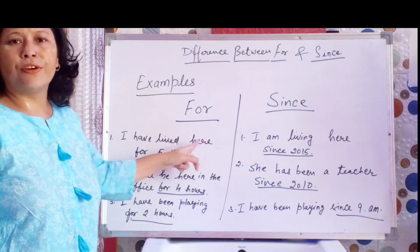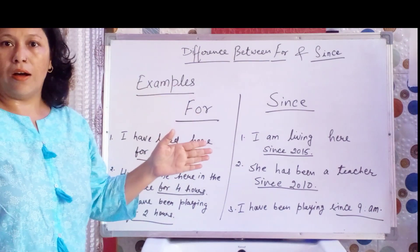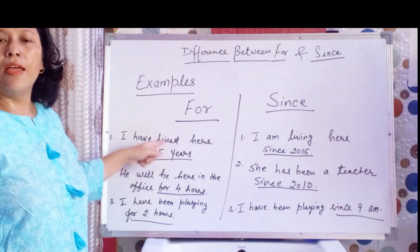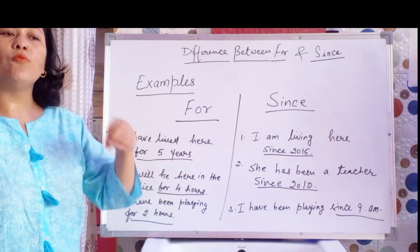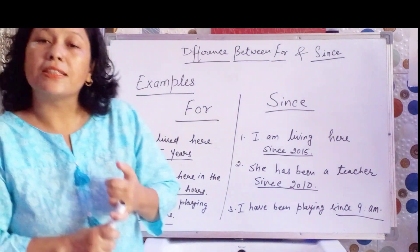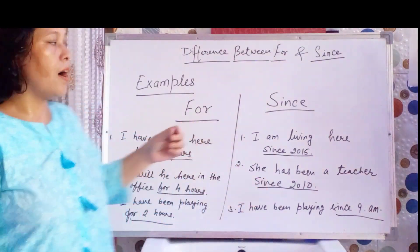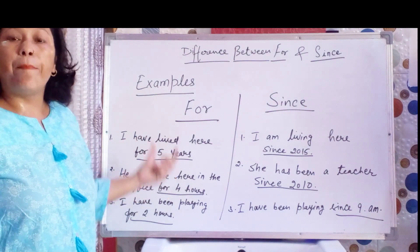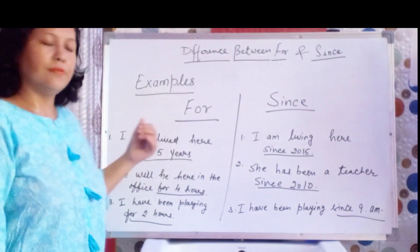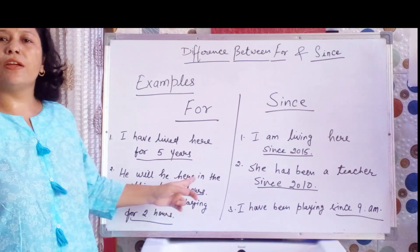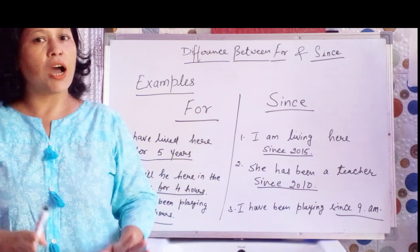'I have lived here for five years.' Mein yahaan paanch saal raha — woh paanch saal koi bhi ho sakti hai, 2017 se 2022 ho sakti hai ya 2015 se 2020 ho sakti hai. Toh woh paanch saal ka duration tha, isliye 'for' aaya. 'He will be here in the office for four hours' — woh office mein 4 ghante ke liye rahega.